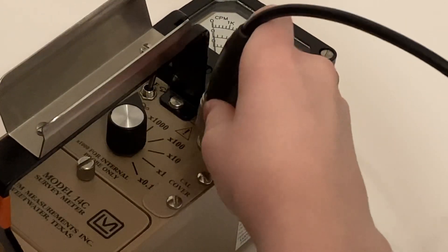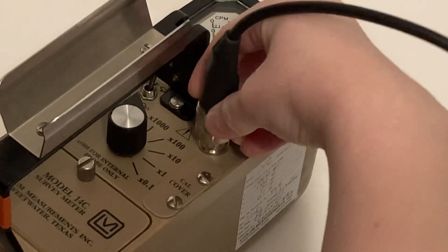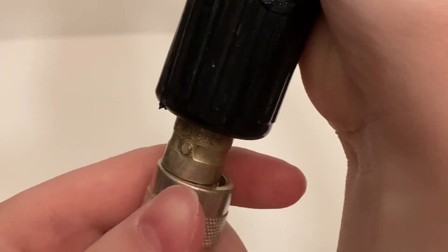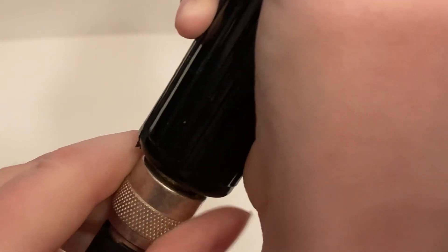Connect the Type-C cable to the connector on the Ludlum Model 14C. Connect the other end of the cable to the Model 44-9 General Purpose Alpha Beta Gamma Contamination Pancake Frisker.